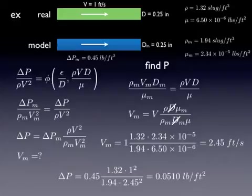Then I can use that to solve for what the pressure drop would be in the real system. That was the point I wanted to make with this example - that sometimes you need to use multiple pies to get to your answer.